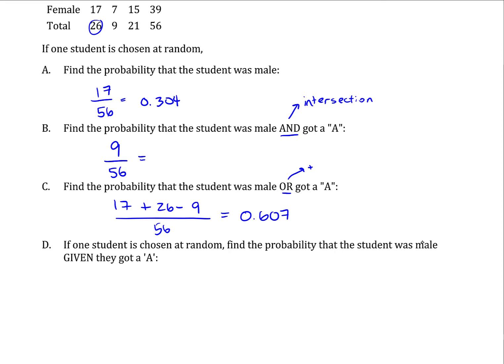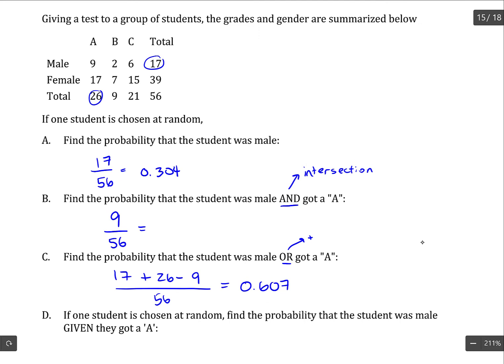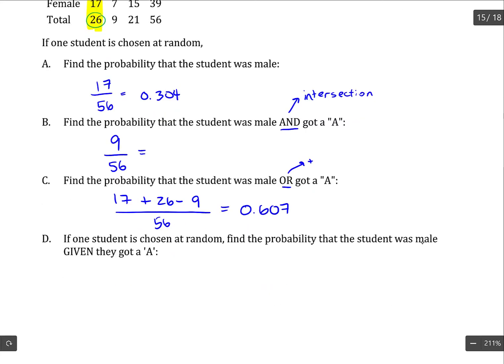If one student is chosen at random, find the probability that the student was male given that they got an A. So if we're given that a student got an A, that restricts us to this group here. So from that group only, the probability of a male is 9 over 26.